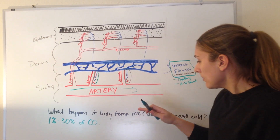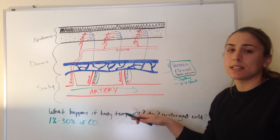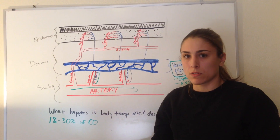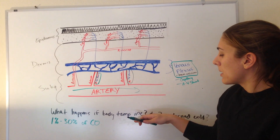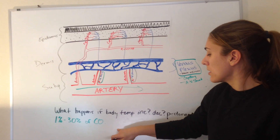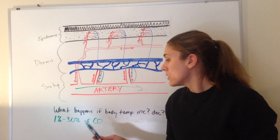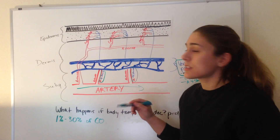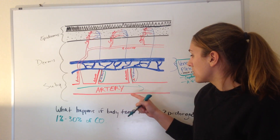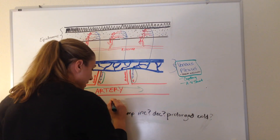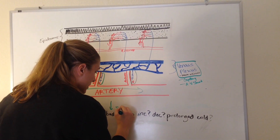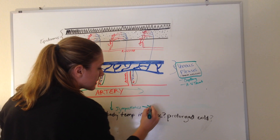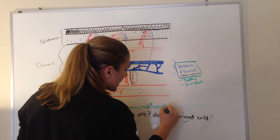So let's talk about what happens if your body temperature increases. As we know, arterioles are under sympathetic control. The main temperature center is in the hypothalamus. So when your body temperature increases, your hypothalamus actually decreases sympathetic outflow to your arterioles. So you have decreased sympathetic outflow, and that causes vasodilation.